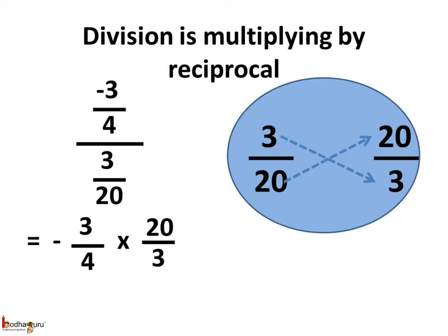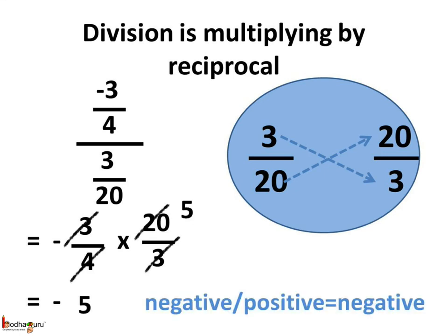Like here, 6 divided by minus 1 by 2 is equal to 6 multiplied by minus 2, and the answer is minus 12. So remember children, a positive rational number divided by a negative rational number — the answer would always be a negative rational number. Now, while performing division with rational numbers, do it as multiplication by the reciprocal of the divisor. Like, minus 3 by 4 divided by 3 by 20 is equal to minus 3 by 4 multiplied by the reciprocal of 3 by 20, that is 20 by 3. We cancel all the common factors from the numerator and the denominator: the 3's cancel each other, and 4 and 20 have a common factor 4, so 20 divided by 4 is 5. As the signs are unlike, the result would be a negative number. So, minus 3 by 4 divided by 3 by 20 is equal to minus 5.